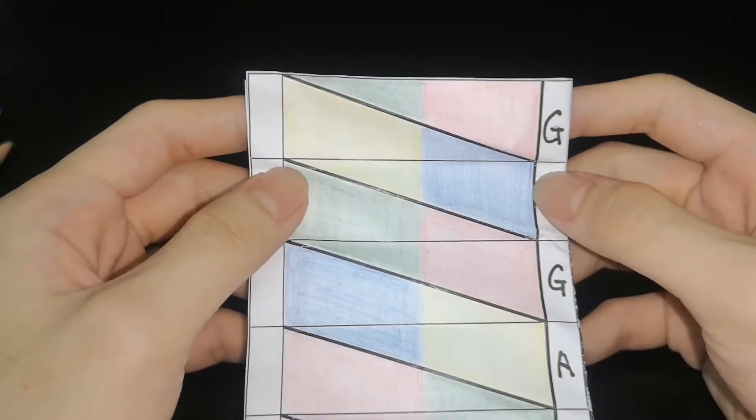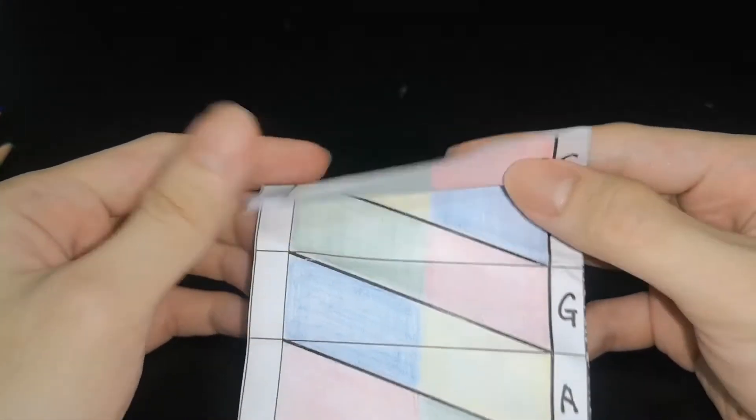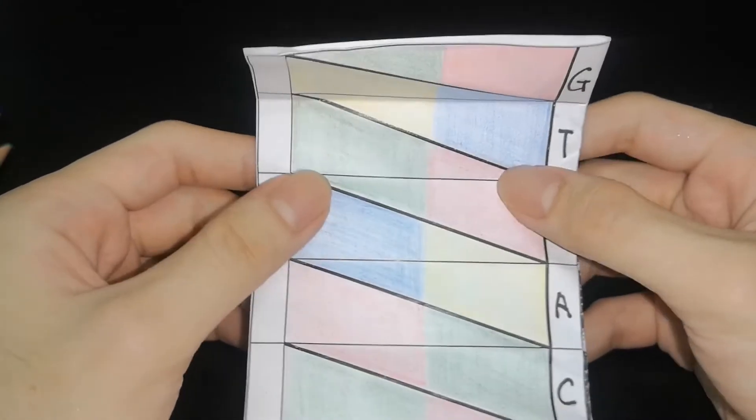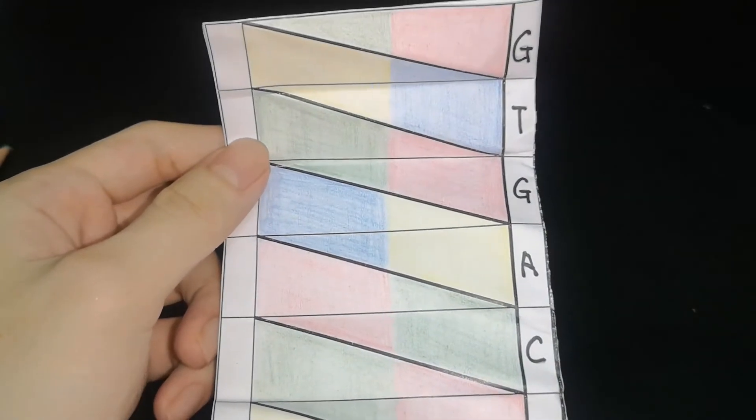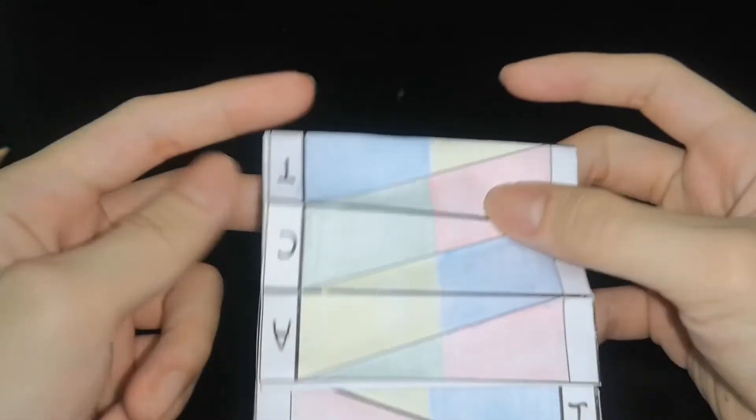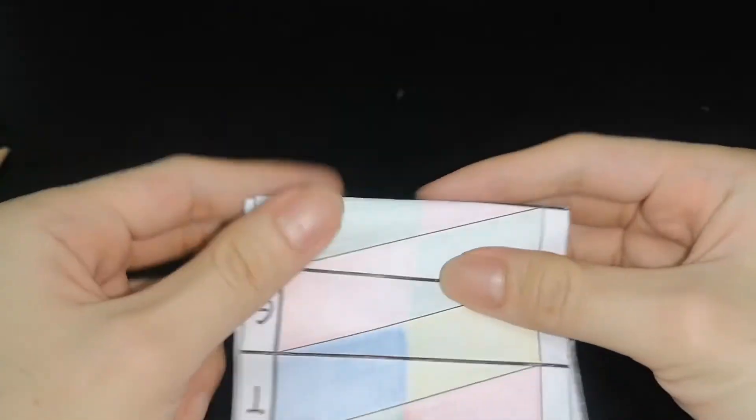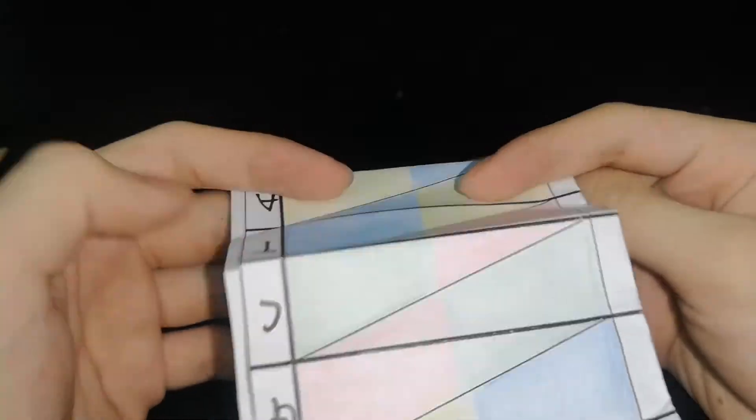Then fold the top segment and unfold. Fold and unfold. Fold the top two segments and unfold. Now you can repeat for all the segments. Fold until all are completed.